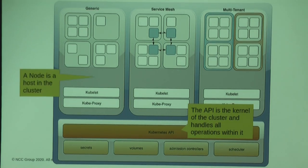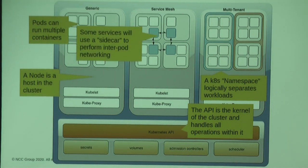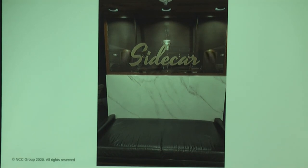We have nodes — just servers, bare metal, or EC2 instances, however you've deployed your workers inside the cluster. Pods can run a bunch of different containers. We have namespacing — mostly a logical separation of Kubernetes objects. If you've got a bunch of worker types, you can throw them in a namespace. We also use sidecars: when a pod has a primary function like NGINX, you might have something like Istio running as a sidecar with a separate function to support that primary container.